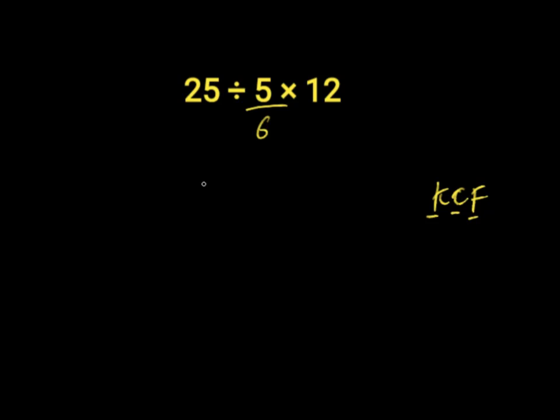We're going to keep 25, change division to multiplication, then flip 5 over 6 to 6 over 5, and multiply by 12.